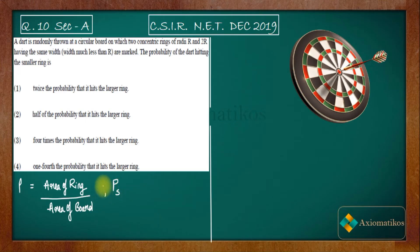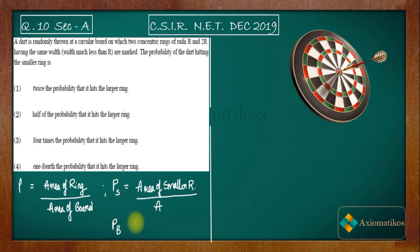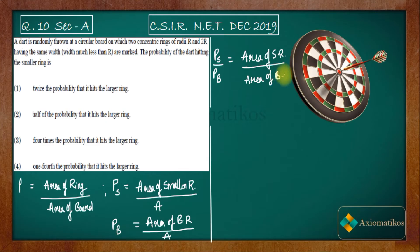Let PS represent the probability of hitting the dart on the smaller ring — that is, area of smaller ring over total area A. And let PB be the probability for the bigger ring — area of bigger ring over A. We now calculate PS divided by PB, which equals area of smaller ring over area of bigger ring.